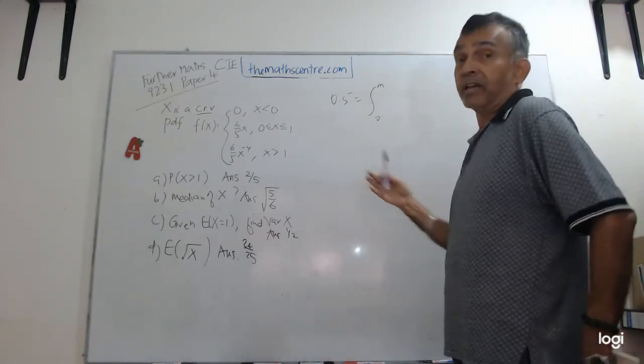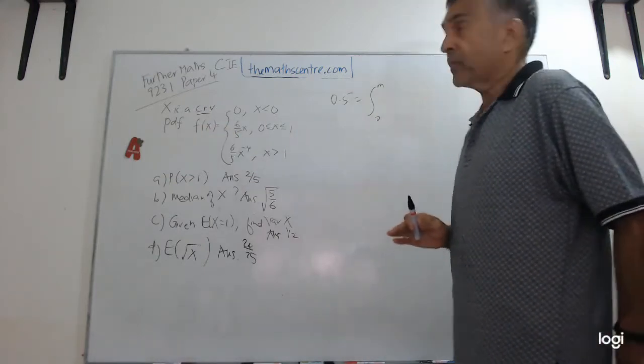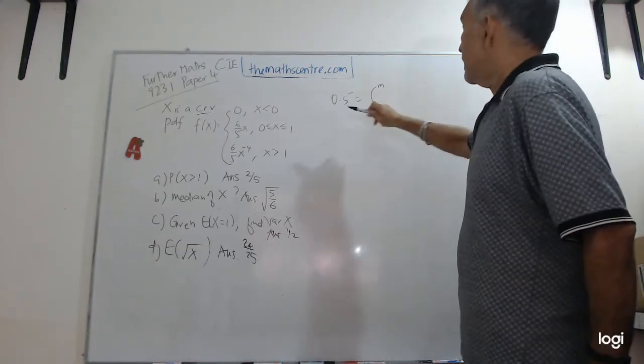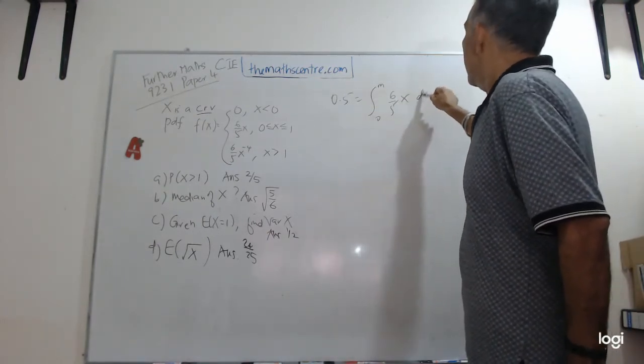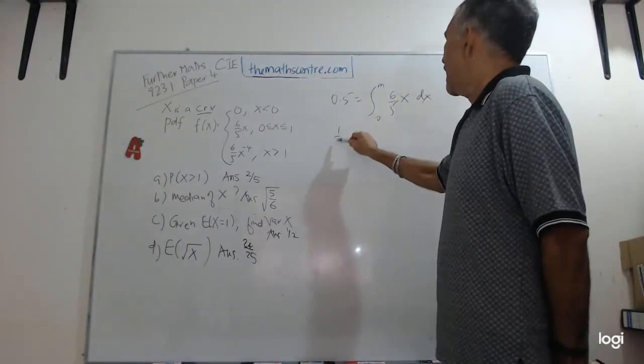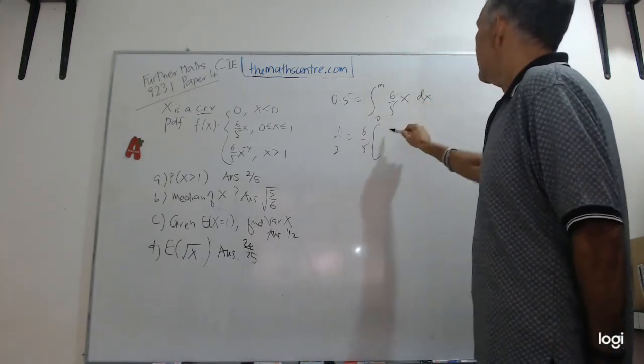Half the probability lies below M. So that's how I go to 0.5. So 0 to M, and we're looking at 6 over 5, x dx, not hard. So let me use half here, right? And then we have got, integrate this,